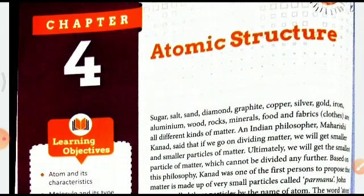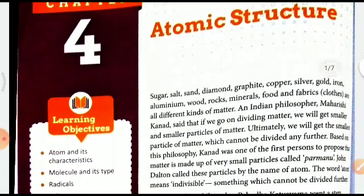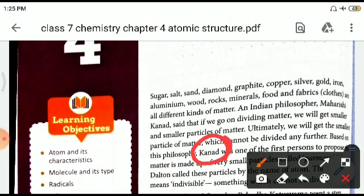Indian philosopher Maharishi Kannad once said that if you go on dividing matter, you will get smaller and smaller particles, and ultimately you will get the smallest particle of matter which cannot be further divided. Based on this philosophy, Kannad was one of the first persons to propose that matter is made up of very small particles called parmanu. The word 'kana' can be derived from the name of this person — Kannad — because he discovered parmanu.